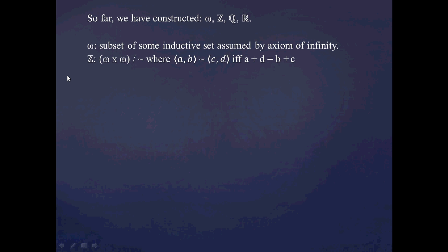Once we had the natural numbers omega, we constructed the integers Z by considering the quotient set omega times omega modulo tilde, where two ordered pairs are considered to be equivalent if a plus d equals b plus c. This is basically the method of considering differences, where the ordered pair (a,b) corresponds to a minus b, with all elements being natural numbers.